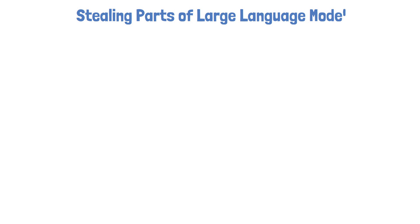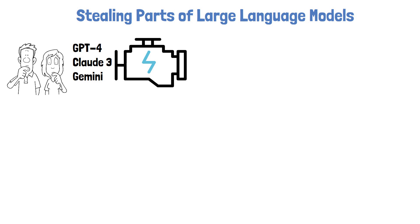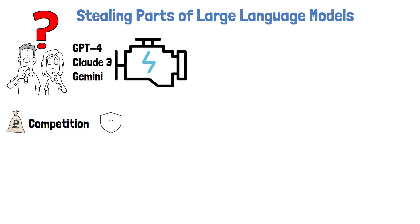Thank you for joining this video about stealing parts of large language models. Many of the top large language models today, such as GPT-4, Llama 3, and Gemini, are closed source, so a lot about the inner workings of these models is not known to the public. One justification for this is usually the competitive landscape, since companies are investing a lot of money and effort to create these models, and another justification is security, since it is easier to attack models when more information is available.